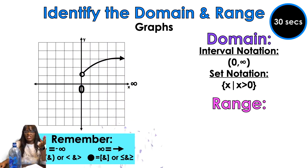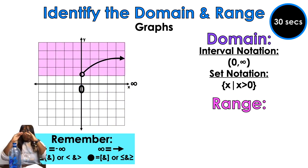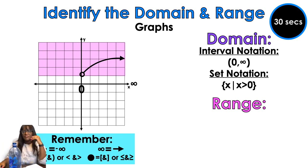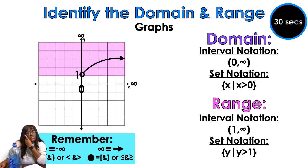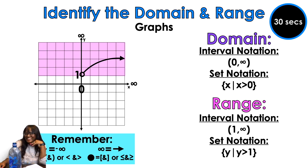I have to be careful with my range also, because my range starts at an open circle but then it goes up forever and ever. Because of that, I'm going to say one to infinity — but be careful about your interval notation: one comma infinity in parentheses, and y is greater than one, not greater than or equal to.